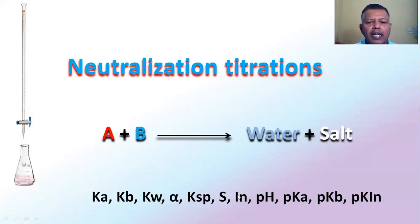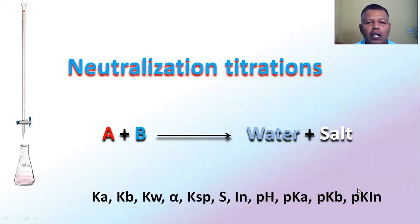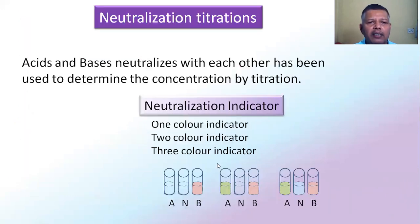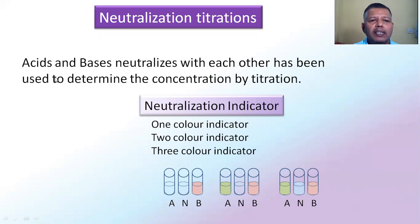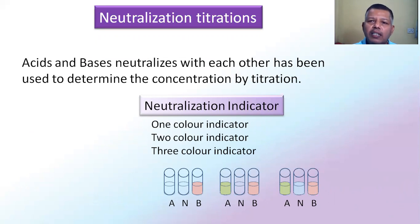pKIN — where IN is the indicator — is the negative logarithm of the equilibrium constant for the indicator. In this way, we are going to study neutralization reactions. In a neutralization reaction, acid reacts with base and they get neutralized with each other, which can be determined with the help of titration — the titrimetric volumetric analysis.